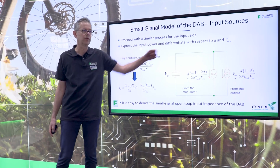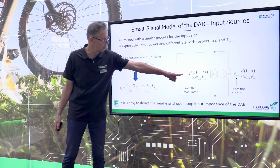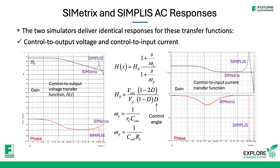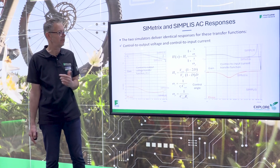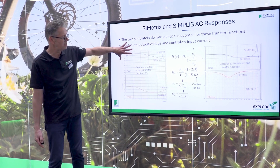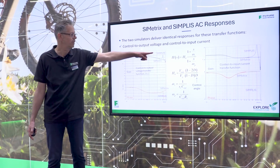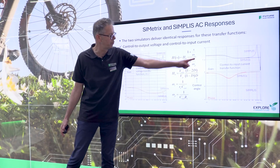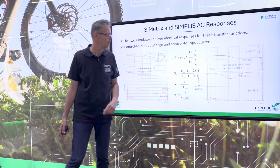This model can be extended as well if you are interested in looking at the input current. You start with the same equation, but this time you control the same control variable D, and you are interested in the current flowing in the input. When you have this average model, you compare it to either lab results to validate the model, or to another model that can be run cycle by cycle with Simplis. In the low-frequency part, you can see a very good match between the magnitude and the phase — between Symetrix, which is the average model, and Simplis, which is the cycle-by-cycle model — on the control-to-output transfer function as well as the control-to-input current transfer function. It's a very classical first-order type of response, with a zero and a pole located at low frequencies.